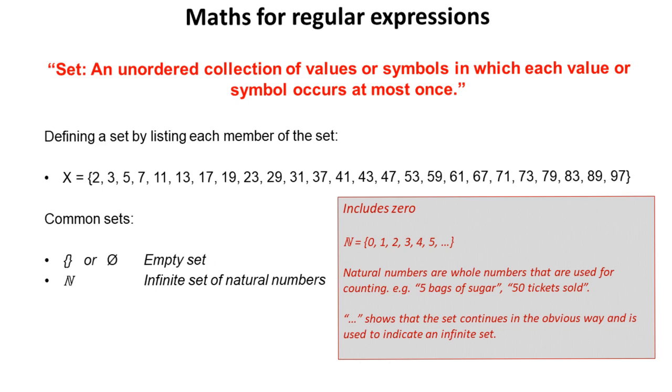Natural numbers are whole numbers that are used for counting. So we'd say, for example, five bags of sugar, fifty tickets sold.